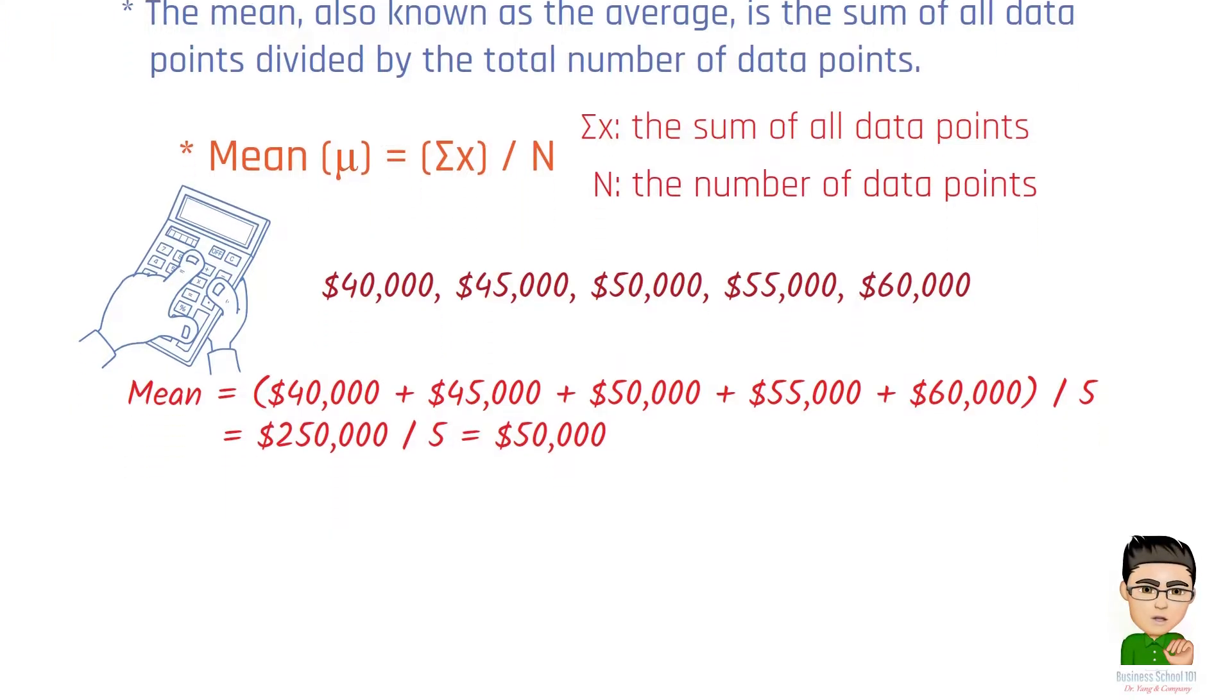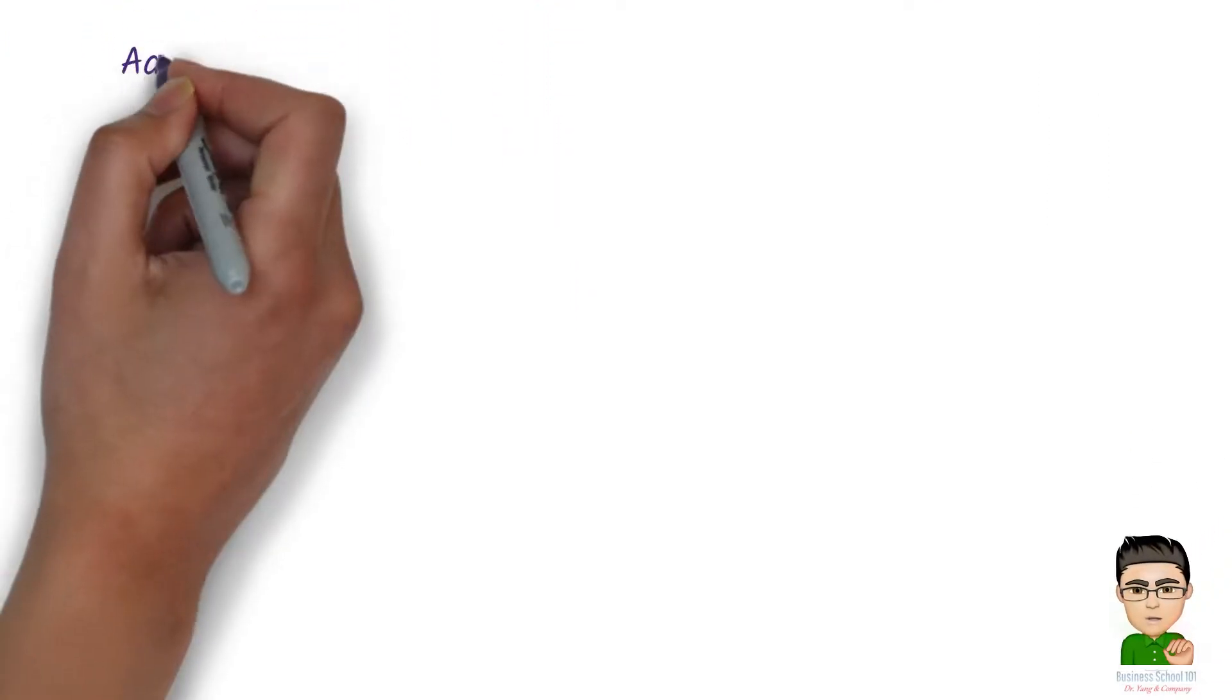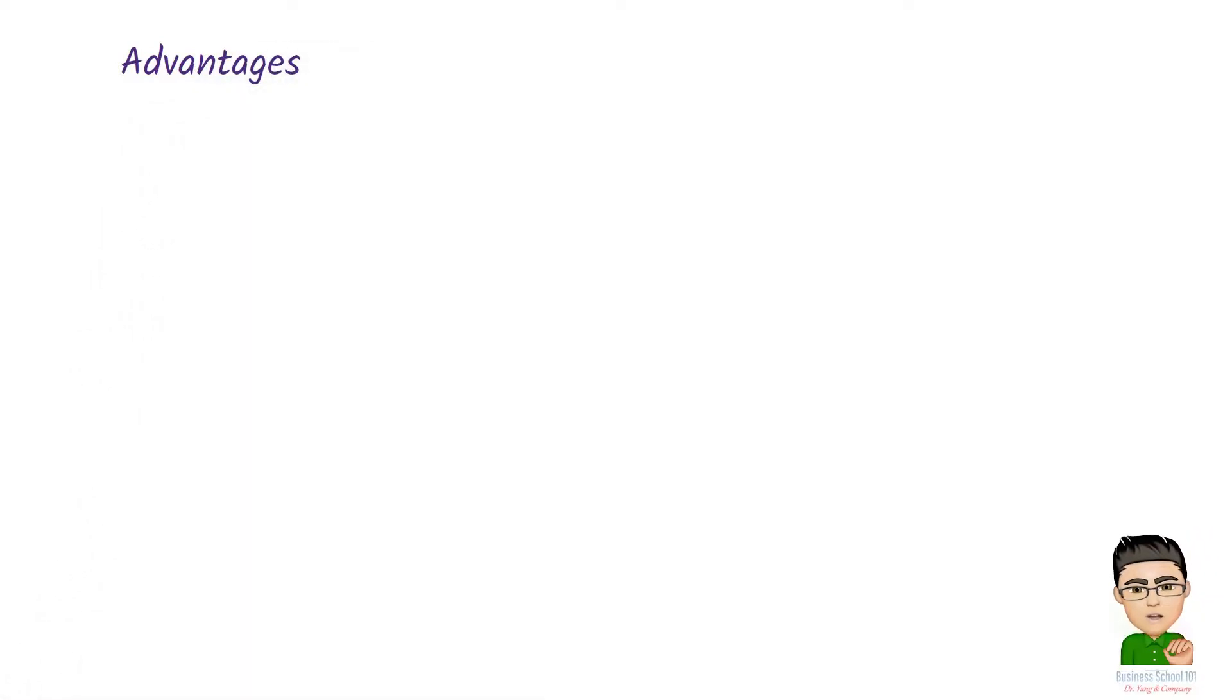In the business context, mean has both pros and cons. Its advantages include: Number 1, Reflects total value. The mean takes into account all data points, providing a comprehensive view of the dataset. Number 2, Useful for calculations. It is mathematically convenient and often used in statistical calculations and hypothesis testing.